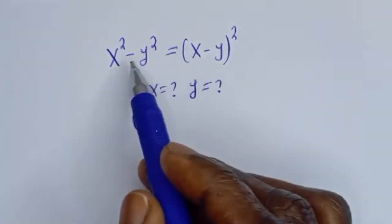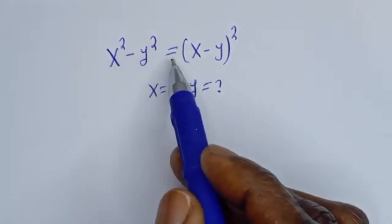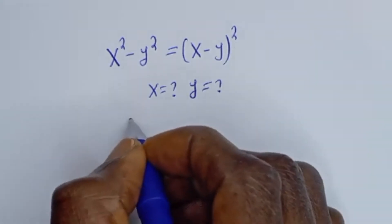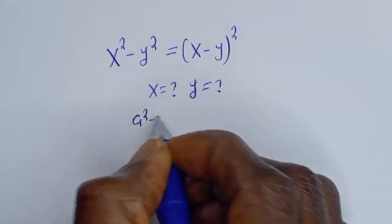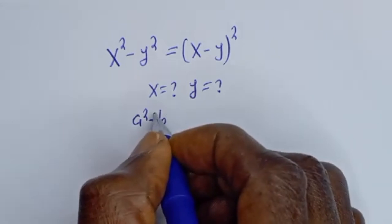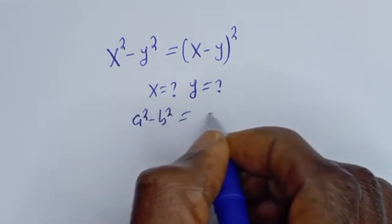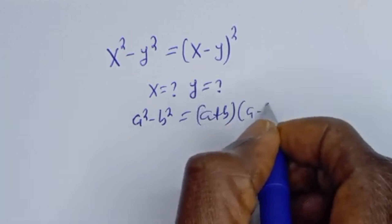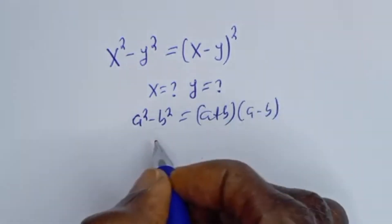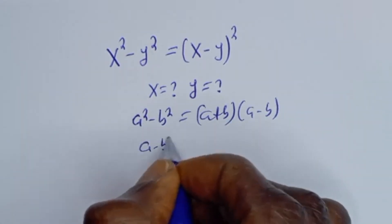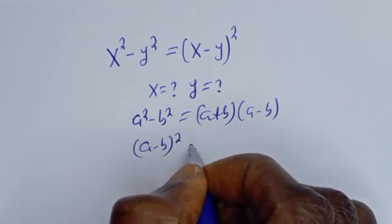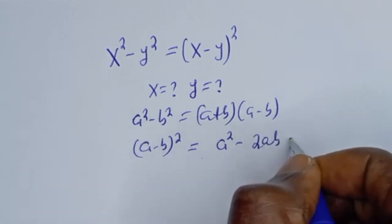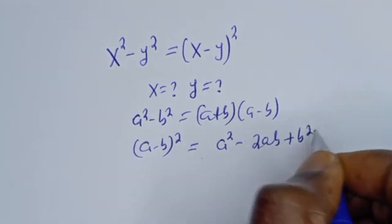For X and Y from this given equation, X squared minus Y squared is equal to X minus Y all squared. Take note: if you have A squared minus B squared, this is equal to A plus B bracket A minus B. And if you have A minus B all squared, this is equal to A squared minus 2AB plus B squared.